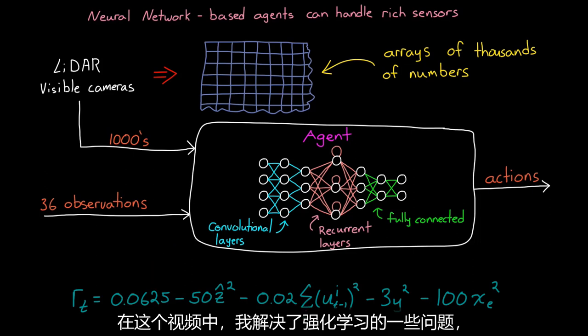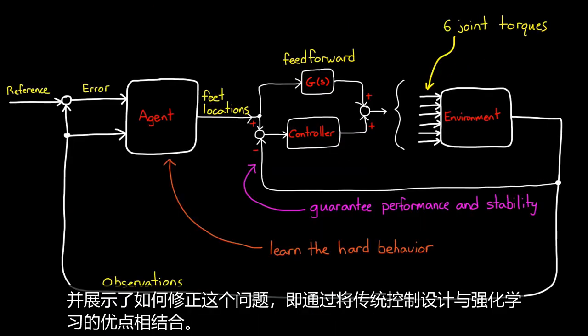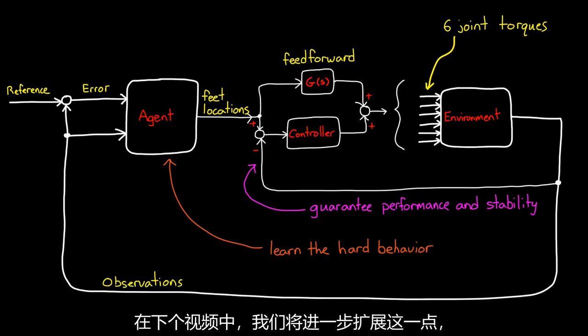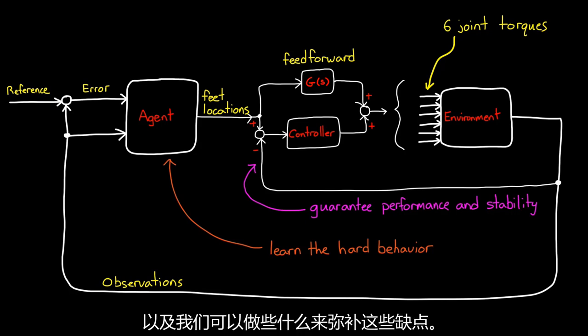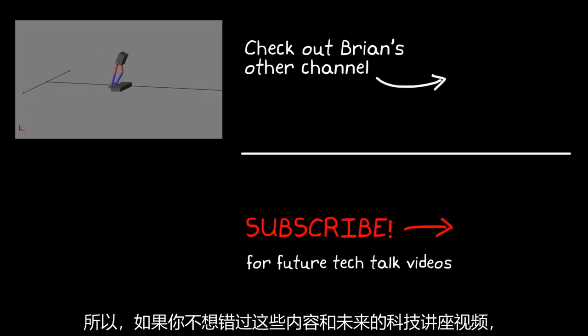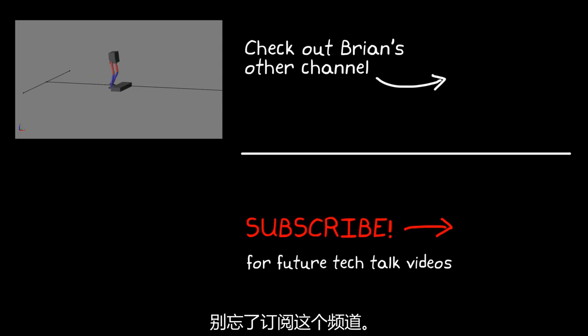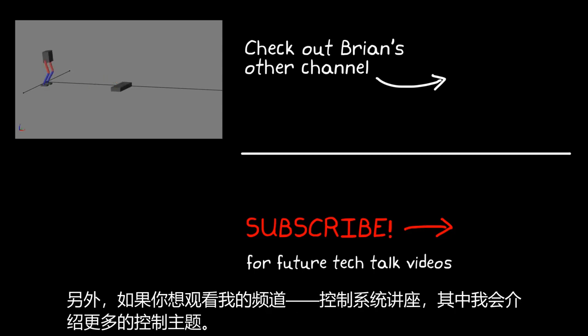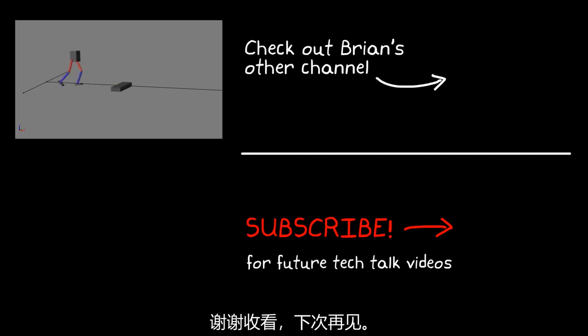Now, I've addressed a few of the problems with reinforcement learning in this video, and I showed how we can modify the problem by combining the benefits of traditional control design with reinforcement learning. Now, we're going to expand on this some more in the next video, where we'll talk about other downsides of reinforcement learning, and what we can do to mitigate them. So, if you don't want to miss that and future Tech Talk videos, don't forget to subscribe to this channel. Also, if you want to check out my channel, Control System Lectures, I cover more control topics there as well. Thanks for watching, and I'll see you next time.